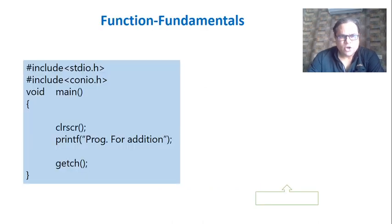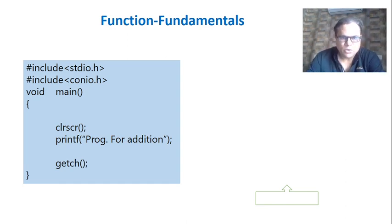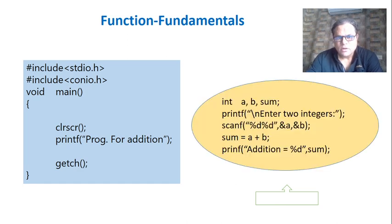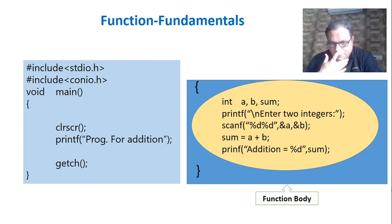Before we start that topic, I want to revise the important terms we have discussed related to functions. A simple C program consists of main, and in the main I am not performing anything except clearing the screen and displaying a message. No input, no calculation, no output is performed inside main. All the commands required to perform input, calculation, and output are taken out of main and written outside as a separate group of commands. If you enclose this set of commands inside a pair of curly brackets, this is known as the function body — that is the first term.